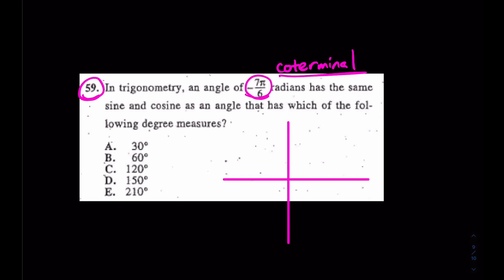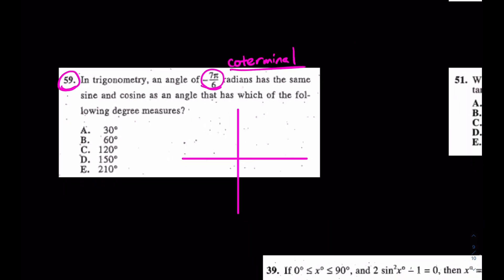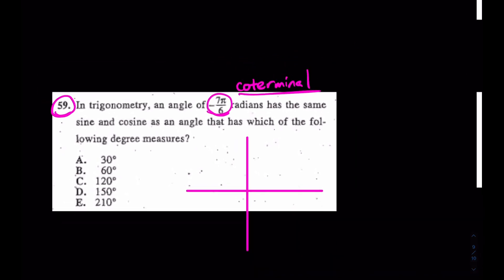If it wants -7π/6, first of all, convert that out of radians into degrees. What's -7/6 times 180? Negative 210 degrees. Now, check this out.